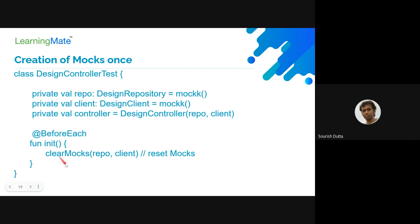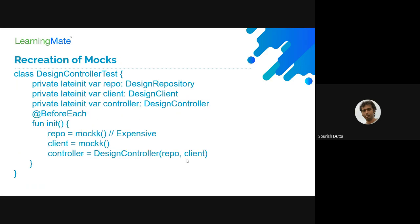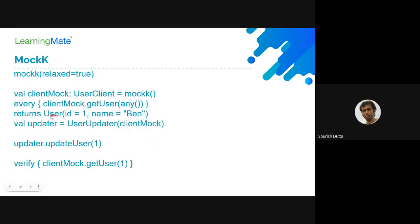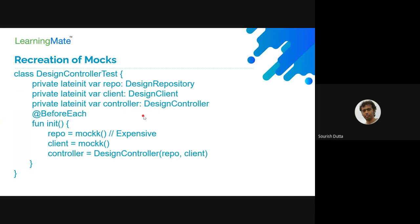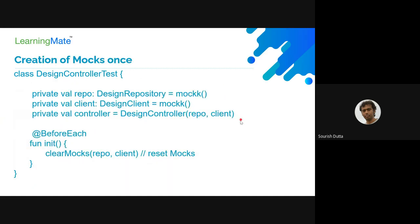What we can do in the before each is reset our mock. That means whatever when-then or verify behavior we are expecting from the previous test case will be reset. In this test case, only the behavior changes we are calling will apply. So here in the mock, for every call, this will be the return - that's the syntax we can use. This way we can refactor our creation of mocks so they are created only once and only reset between tests.